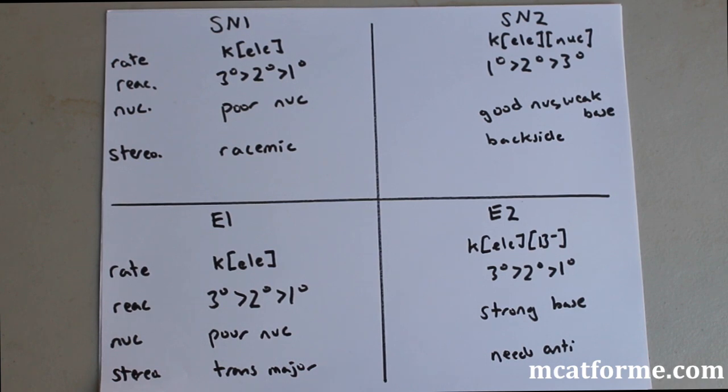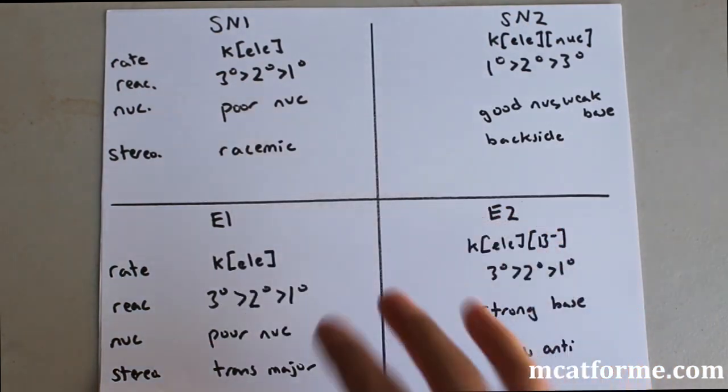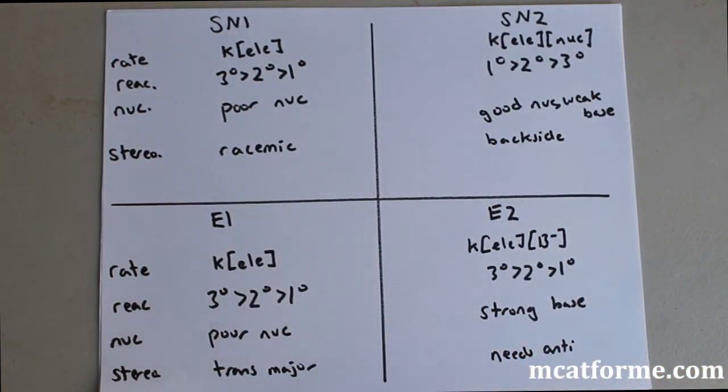Now we're going to be looking at more of the facts behind the differences and similarities between SN1, SN2, E1, and E2. We're going to be looking at these four traits right here: rate, reactivity, the nucleophile, and the stereochemistry because those are probably the most important. Obviously the main difference between SN1, SN2, and E1 and E2 is that E1 and E2 forms the alkene, forms the double bond. So we should remember that.